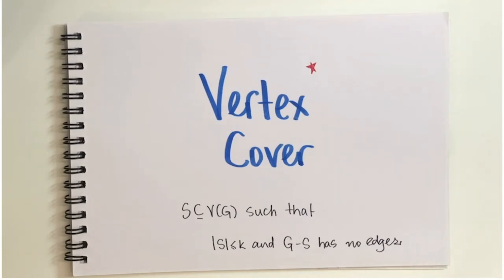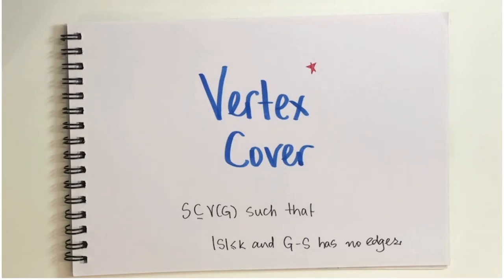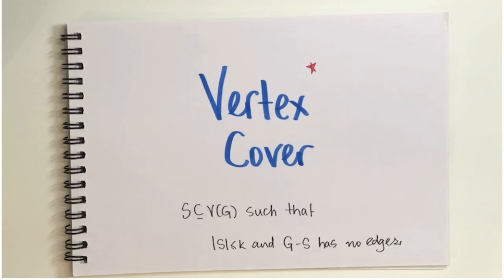If you recall from our introductory discussions, a good parameter is one that gives algorithmic insight and allows for FPT-type running times, but also one expected to be small in most situations. The standard parameter for vertex cover is the solution size, which we have worked with all along. It has given us linear-sized kernels and the nice branching algorithms we discussed earlier this week.